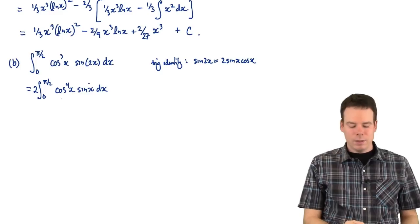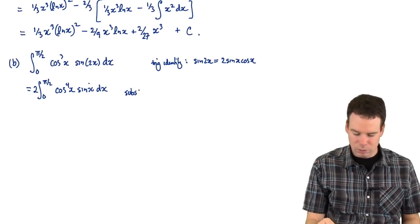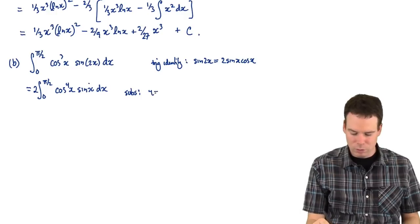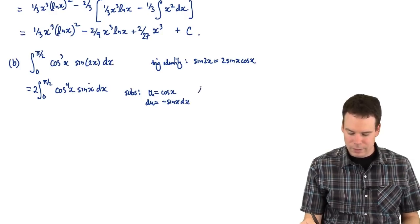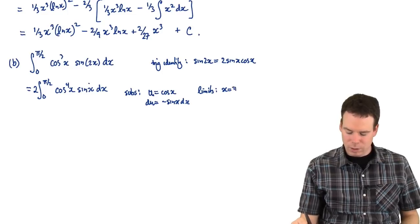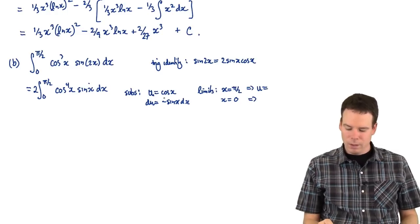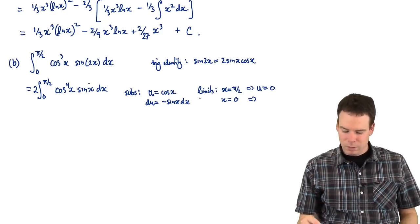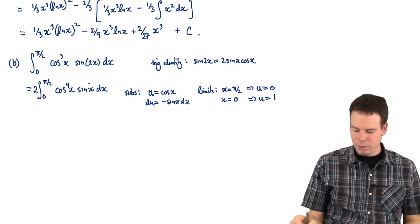Now why is this nice? It means that I can substitute for cosine because the derivative right there is sine. So now I can use a substitution. I started with a trig identity to rewrite it, now I use a substitution. Let u equal cosine of x, so du is equal to negative sine(x) dx. It's a definite integral, so we'll switch the limits of integration. When x is pi/2, cos(pi/2) is zero; when x is zero, cos(0) is one. So our new lower limit is one and our new upper limit is zero.